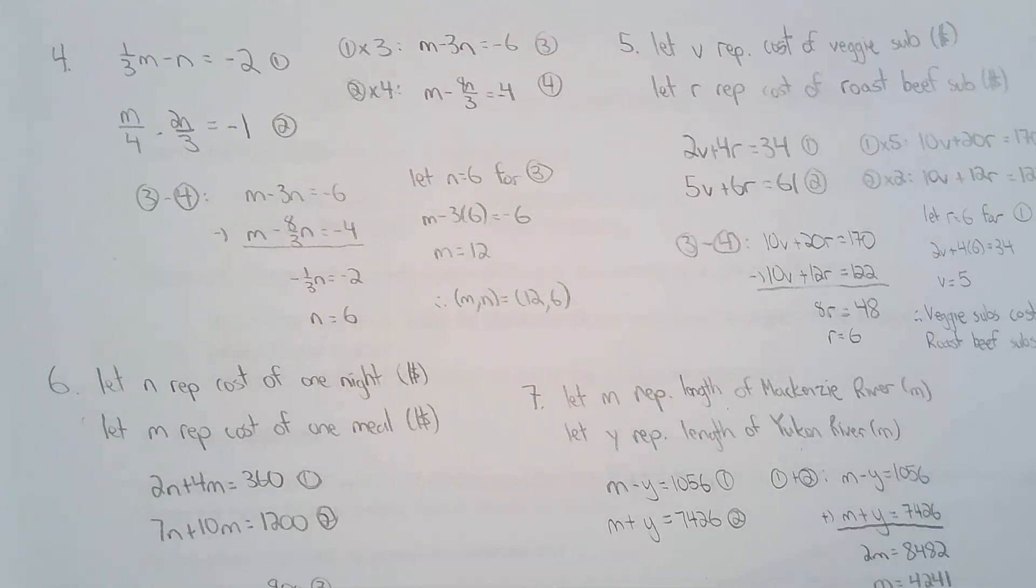And looking at this now, what I could have done as well is I could take equation one and just multiply it by three quarters because one-third times three quarters will give me a quarter and that'll allow me to eliminate m.